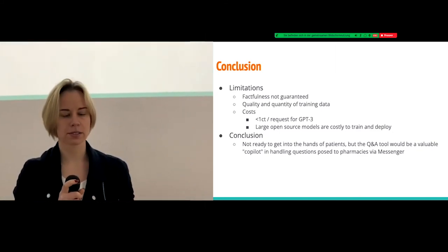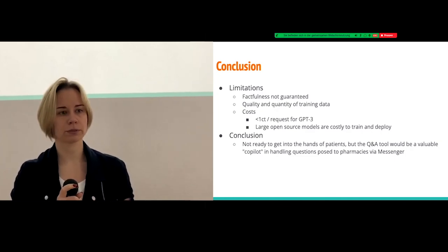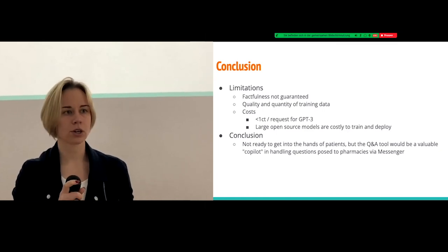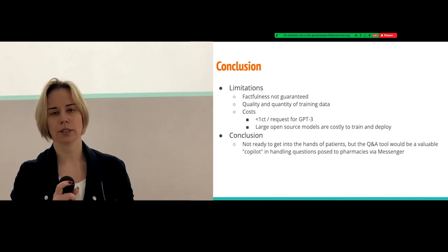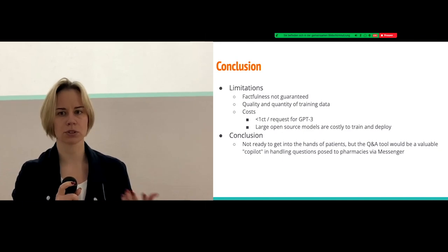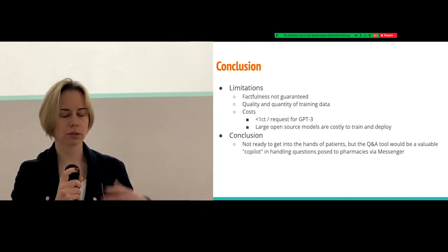So as you saw, the factfulness is not always guaranteed, but the model is often very correct. And what could have been also better is the quality and quantity of our training data. So we would have ended with a better open source model. And also you have to pay for using GPT-3. It costs about one cent or a little bit less for every request. And if you want to train an open source model, that's also costly. It would start when you want to train, let's say GPT-J with 6 billion parameters, starting with a few hundred euros and you can go up to open end.